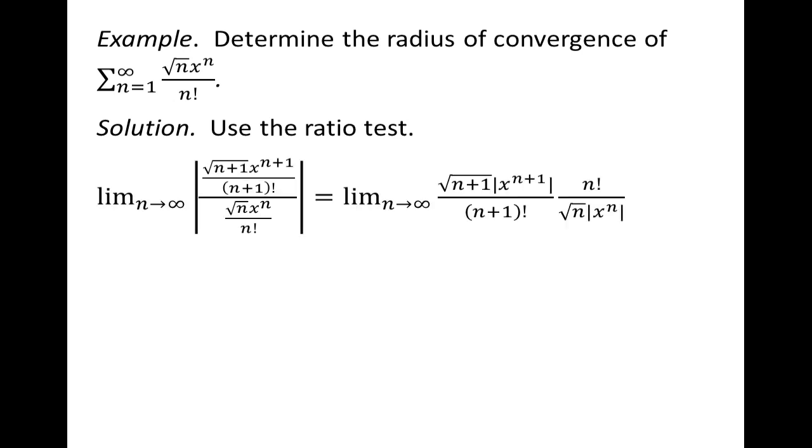Alright, so we're going to do the ratio test. We take our original sequence, throw that in the denominator. In the numerator, we throw in the next term of the sequence, so we replace all of our n's by n plus 1.